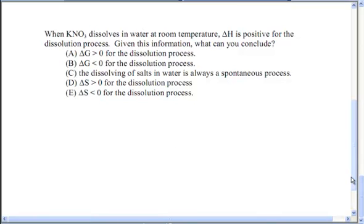Last one. When potassium nitrate dissolves in water at room temperature, the delta H is positive for the dissolution process. Dissolution means dissolving. Given this information, what can you conclude? Delta G is greater than zero for the dissolution process, which means non-spontaneous. Delta G is negative, spontaneous. Dissolving of salts and water is always a spontaneous process. Be careful of that word. I'll get to that in a second. Delta S is greater than zero for the dissolution process. Delta S is less than zero for the dissolution process.